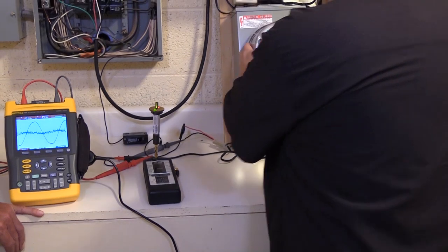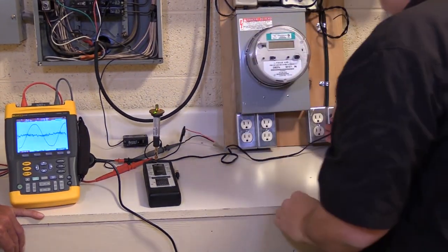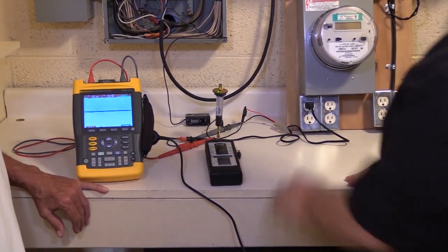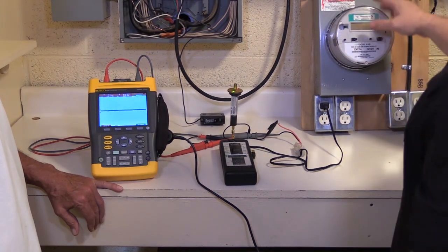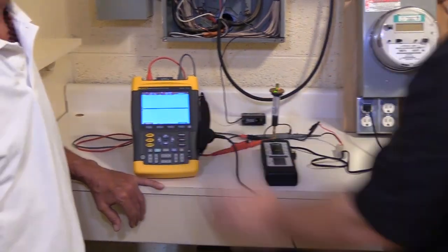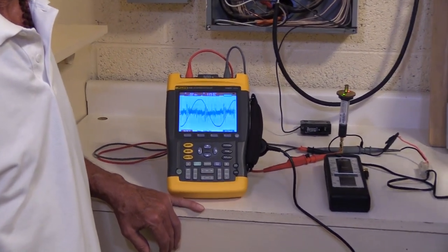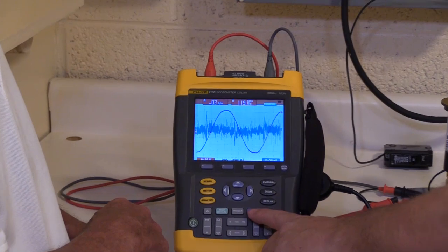So we're going to attach this to the panel. And now we're going to measure electricity running through the smart meter. Right now the switch isn't thrown. As you can see, there's nothing happening. So we're going to turn this on. Whoa. So we've got quite a bit of distortion going on.